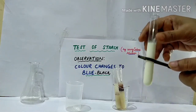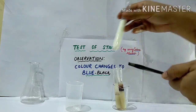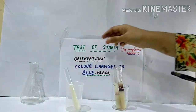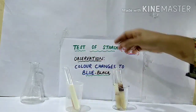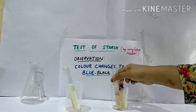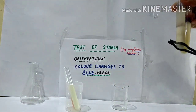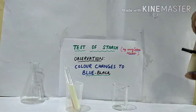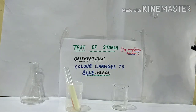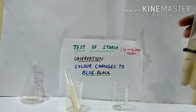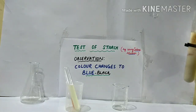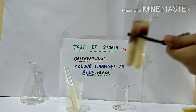So the food items in which the color changes to blue-black are the ones that contain starch. The two food items that contain starch are rice and wheat.